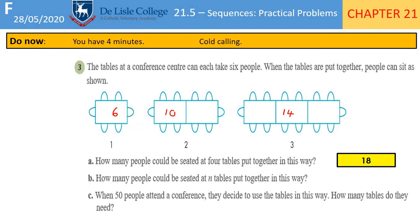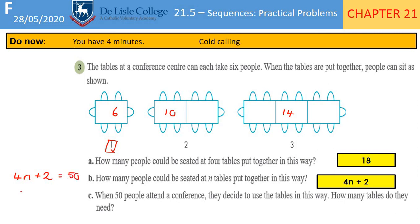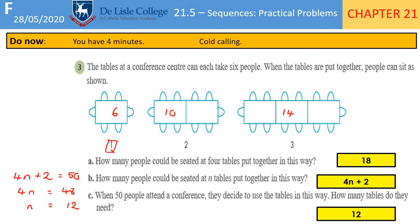How many people could be seated at n tables? We're adding 4 each time, so we know it's 4n to start. If n is 1, 4 times 1 is 4, plus 2 gets you 6. So the nth term rule is 4n + 2. When 50 people attend a conference, how many tables do they need? Write 4n + 2 = 50, subtract 2 to get 4n = 48, divide by 4 to get n = 12. You could also just carry the sequence on to 50, but if it were 300 people you'd need a systematic approach.